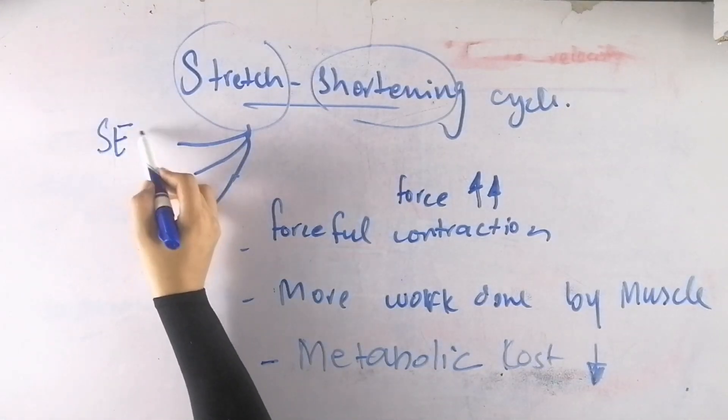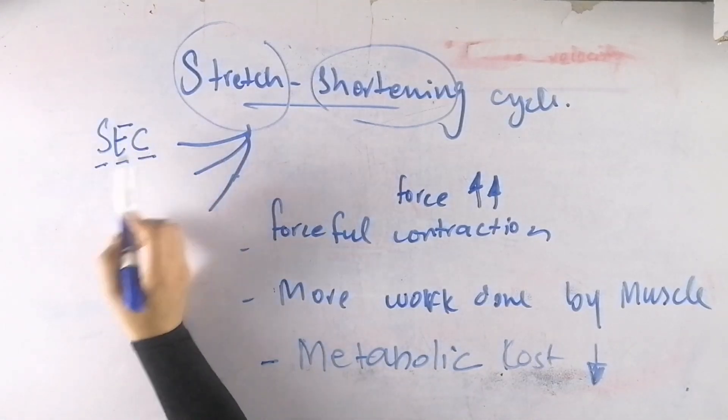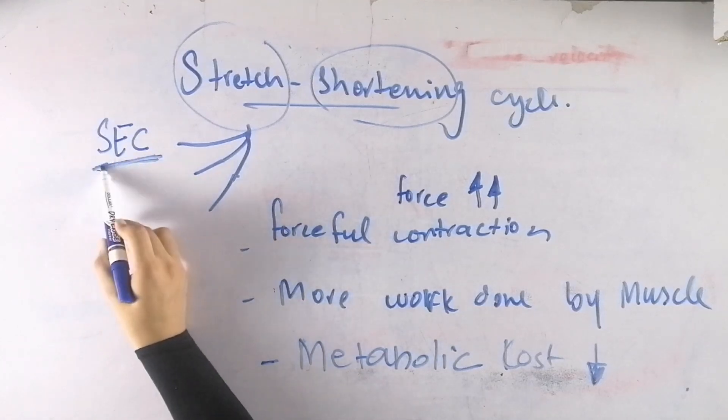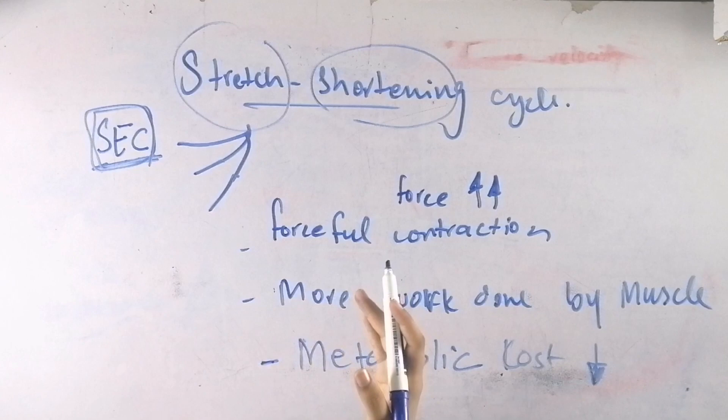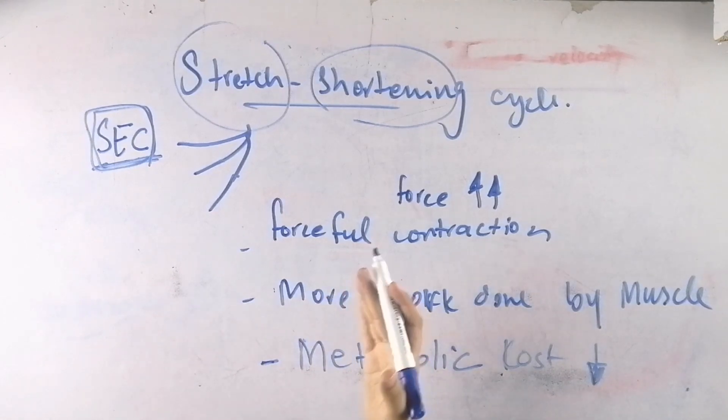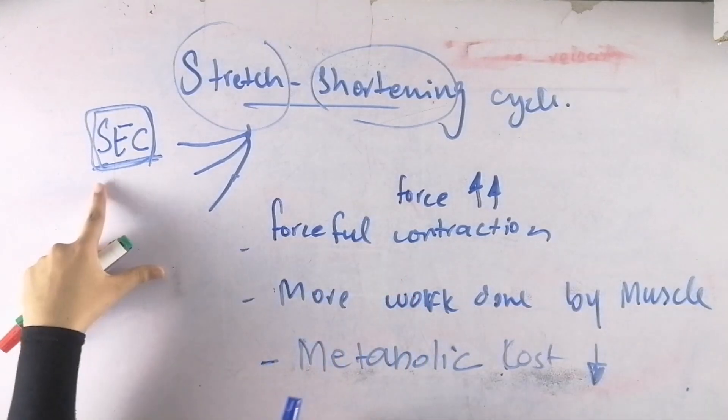We have our SEC, the series elastic component, which is basically the tendon attachments to the muscle. So we have a series elastic component.